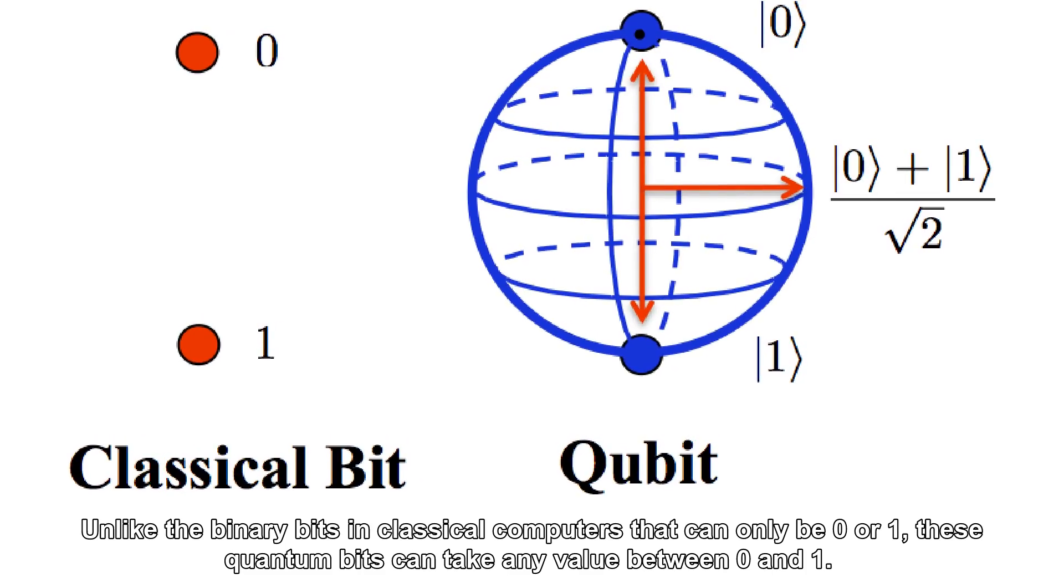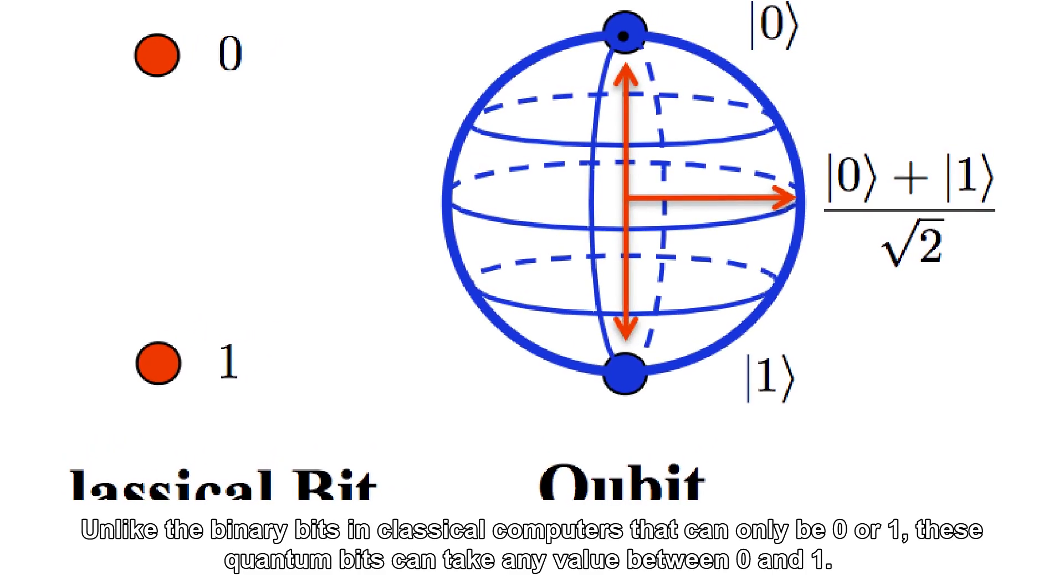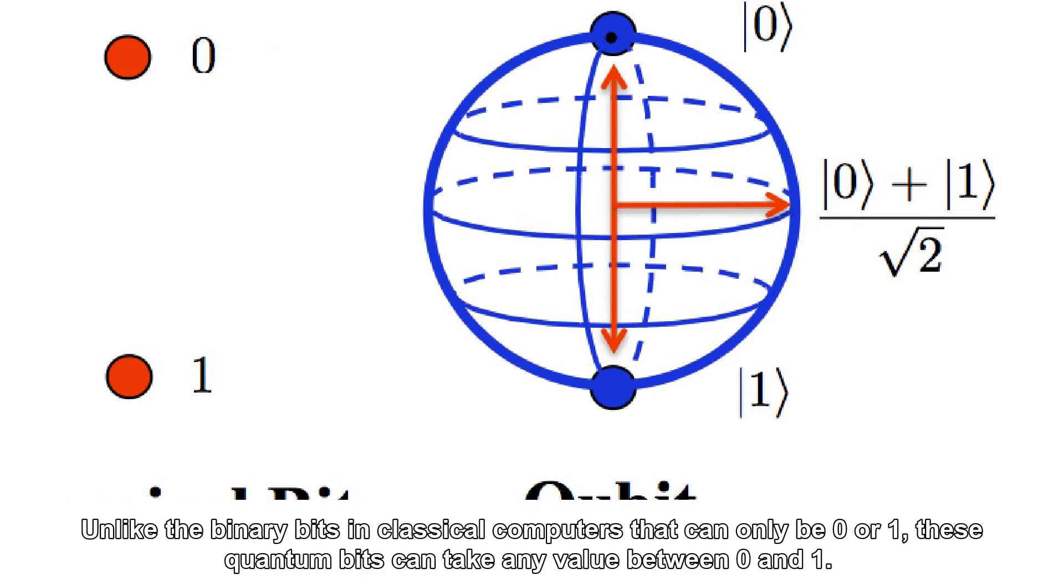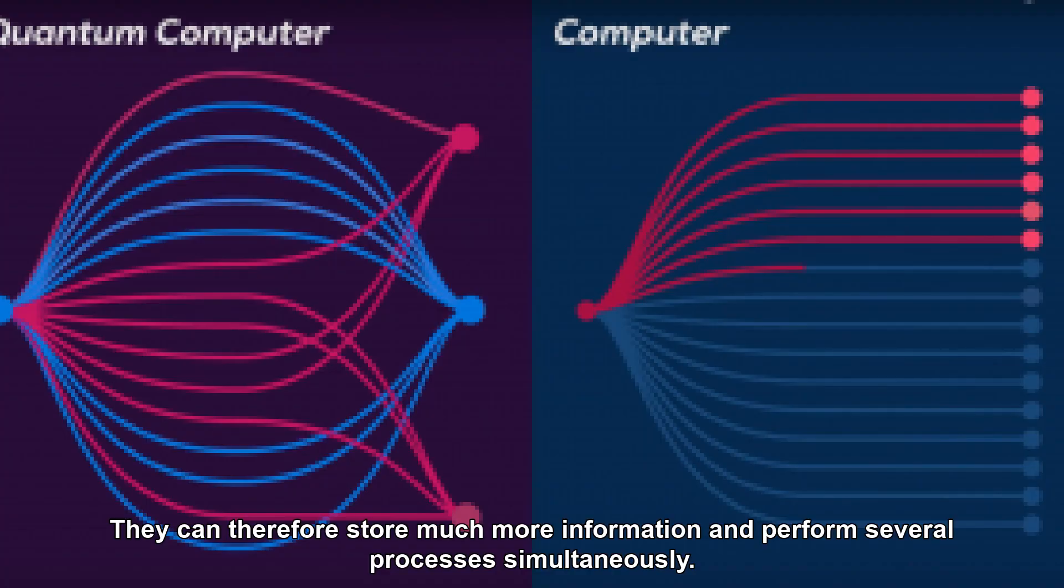Unlike the binary bits in classical computers that can only be 0 or 1, these quantum bits can take any value between 0 and 1. They can therefore store much more information and perform several processes simultaneously.